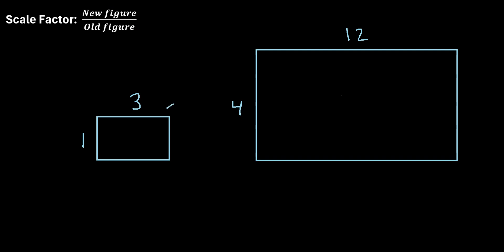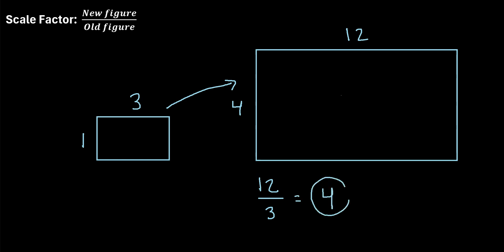Since we're going from the small rectangle to the large rectangle, we'll call the large rectangle the new figure. We can pick any side we want, so let's pick the side with a length of 12. We say 12 divided by the corresponding side of the old figure — the small rectangle — which is the side with a length of 3. So 12 divided by 3 equals 4. The scale factor is 4.